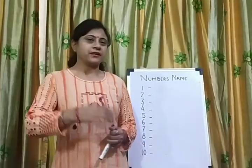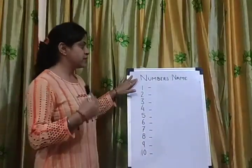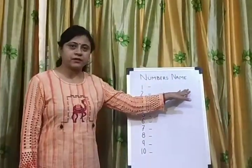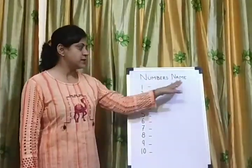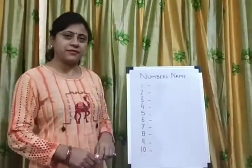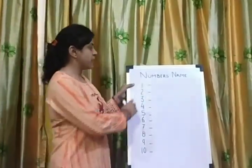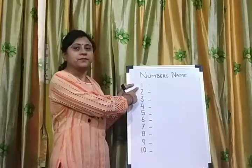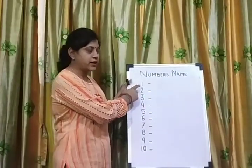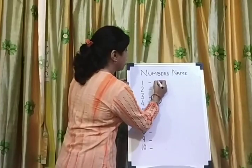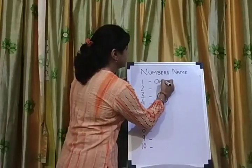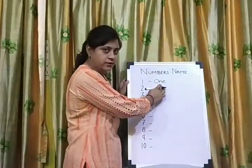Let's start. Today I will tell you about numbers name — the spelling of the numbers. Now the first number is one. The spelling of one is O-N-E. One.